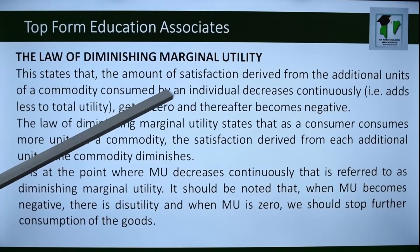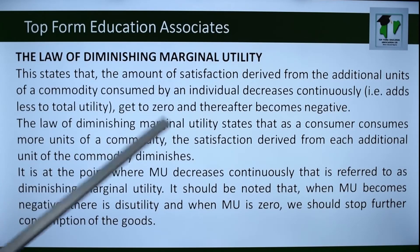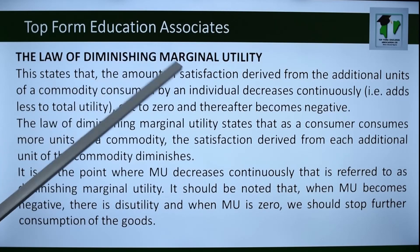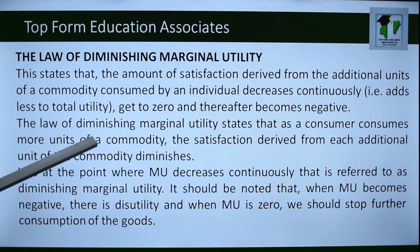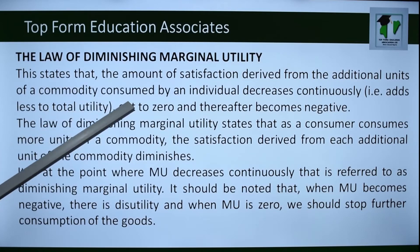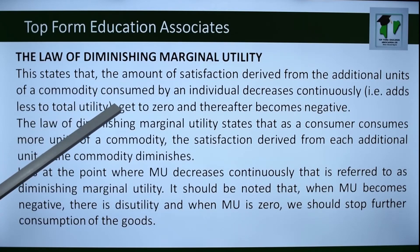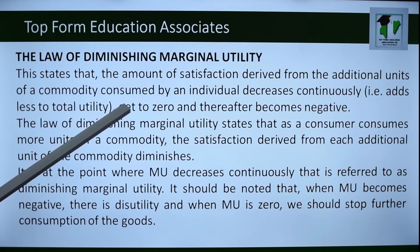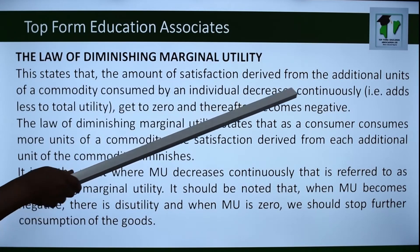The Law of Diminishing Marginal Utility states that the more of a commodity you consume, initially the satisfaction will be high, but as you continue to consume the same commodity, satisfaction begins to decrease, gets to a point where it is zero, and thereafter becomes negative — at which point we say you have disutility.